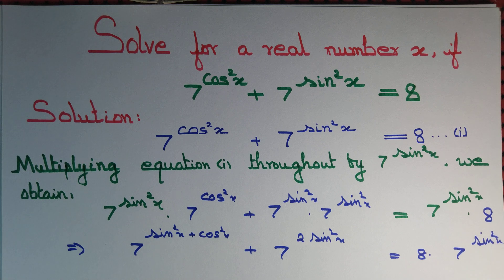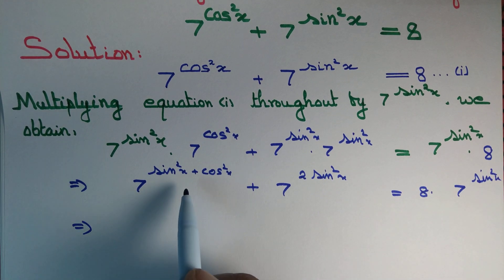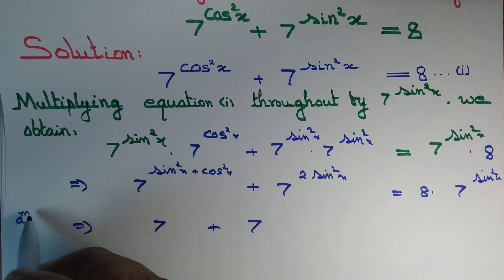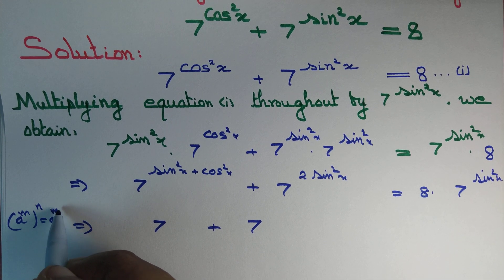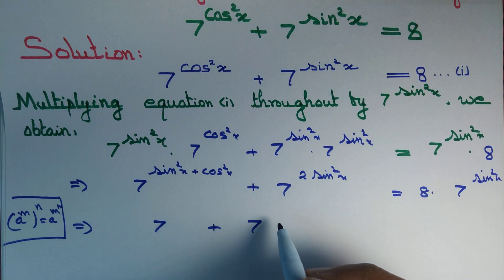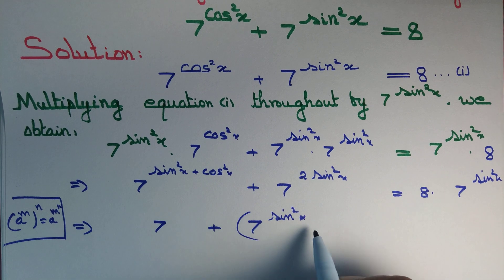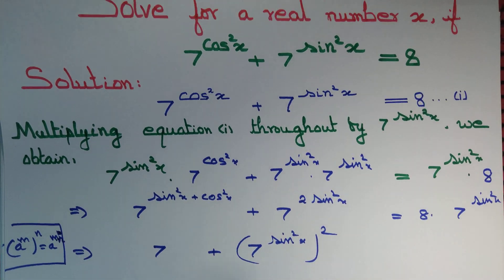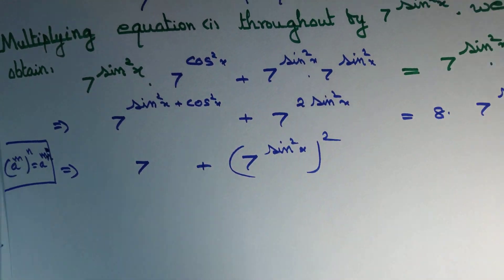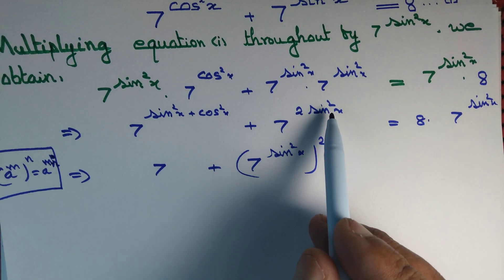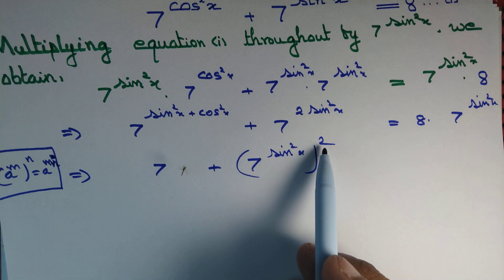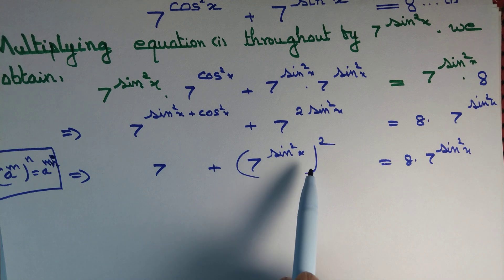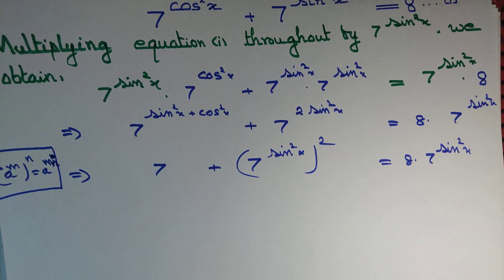Since sine squared x plus cosine squared x equals 1, the first term simplifies to 7. For the second term, we use the identity a^(mn) = (a^m)^n, so 7^(2 sin²x) can be written as (7^(sin²x))² . The equation becomes 7 + (7^(sin²x))² equals 8 times 7^(sin²x).